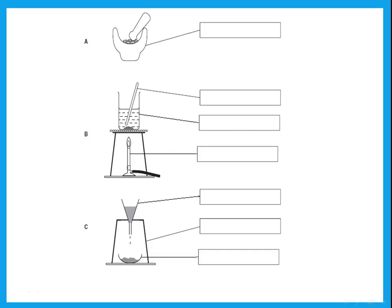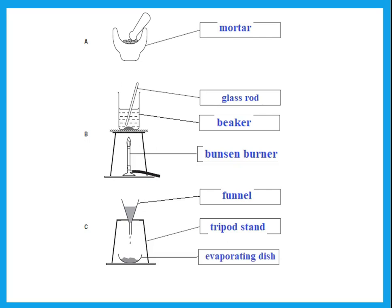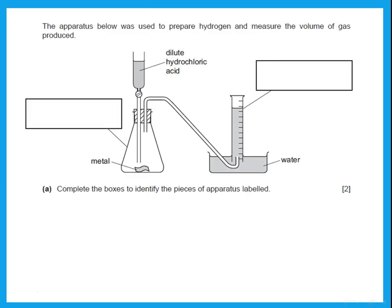The next question asks you to label the apparatus. A is a mortar — if you write mortar and pestle that's fine, but the arrow points to the mortar. B has a glass rod used for stirring, and that container is a beaker. The apparatus used to heat the solution is a Bunsen burner. In C, there is a funnel, the tripod stand it stands on, and down there is an evaporating dish.